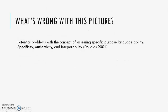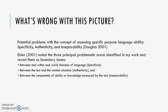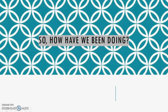So what's wrong with this picture? Potential problems with assessing specific purpose language ability are specificity, authenticity, and inseparability. In the same year, Kathy Elder noted the three principal problematic areas and recast them as boundary issues: boundaries between and within real-world domains of language (specificity), between the test and the non-test situation (authenticity), and between the components of ability or knowledge measured by the test (inseparability). Thankfully, Barry O'Sullivan suggested he did not believe these are insurmountable, and researchers have been working on them ever since.